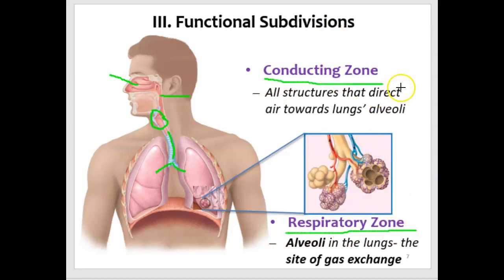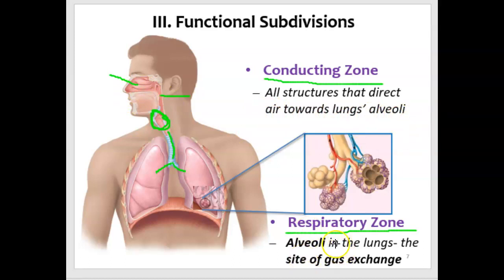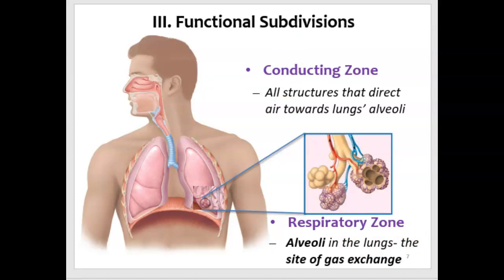The conducting zone includes all organs or structures that conduct air — the nasal cavity, pharynx, larynx, trachea, and bronchi. The main function is to conduct air towards and away from the lungs, though obviously the nasal cavity also involves smell and the larynx has vocalizations. The respiratory zone is functionally the site where gas exchange takes place, mainly between structures in the lungs called alveoli and the blood.